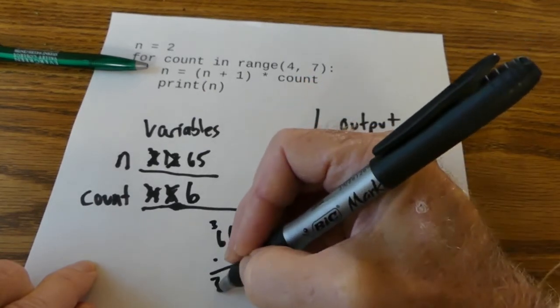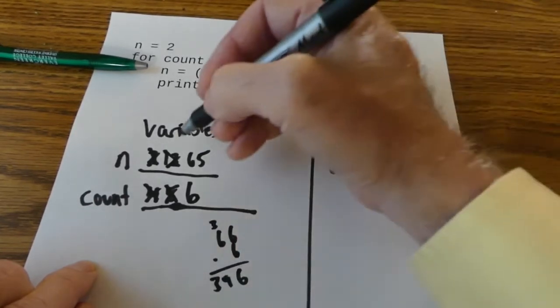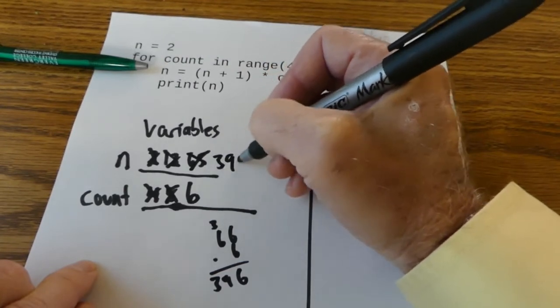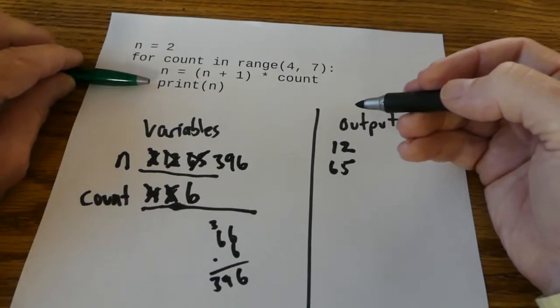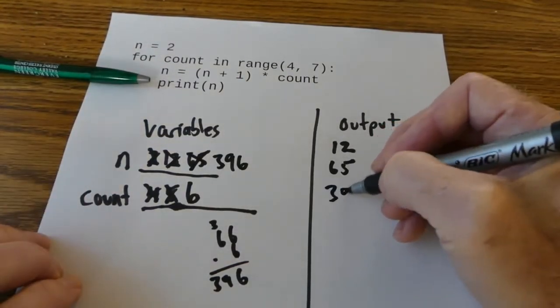6, 3, 396. So 396 will go into n. And now I'm going to print whatever's in n which is 396.